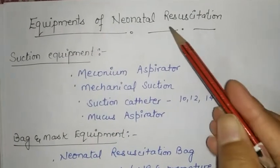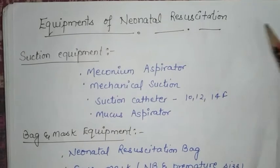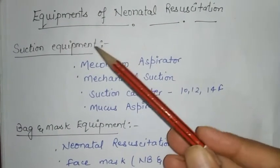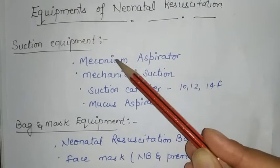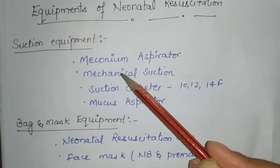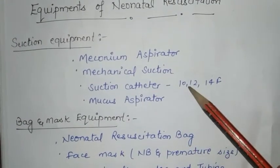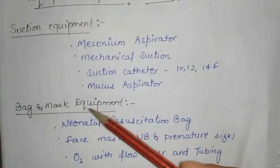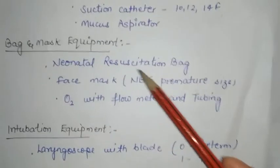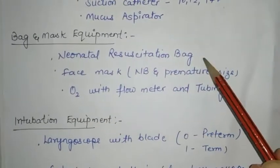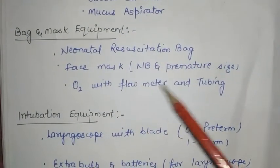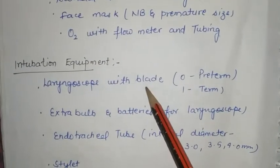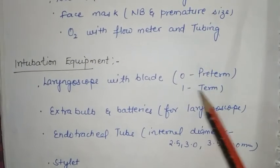Equipment for neonatal resuscitation is divided into categories. Suction equipment includes a meconium aspirator, mechanical suction, suction catheters of 10, 12, and 14 French, and a mucus aspirator. Bag and mask equipment includes a neonatal resuscitation bag, face mask, and oxygen with flow meter and tubing.